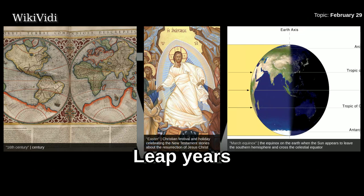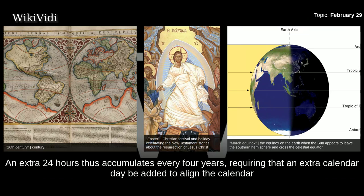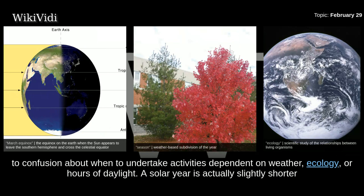Although most modern calendar years have 365 days, a complete revolution around the sun takes approximately 365 days and 6 hours. An extra 24 hours thus accumulates every 4 years, requiring that an extra calendar day be added to align the calendar with the sun's apparent position. Without the added day, in future years the seasons would occur later in the calendar, eventually leading to confusion about when to undertake activities dependent on weather, ecology, or hours of daylight.